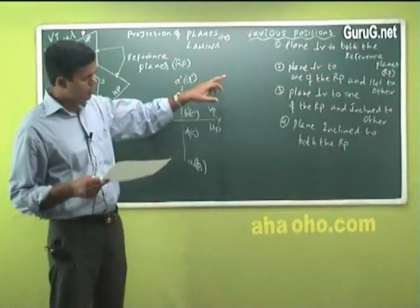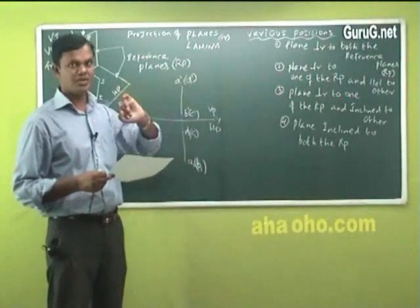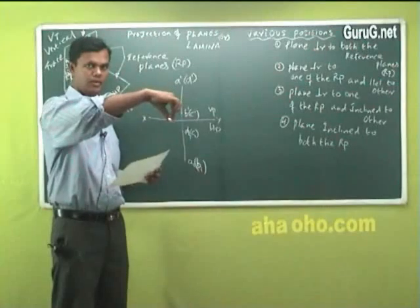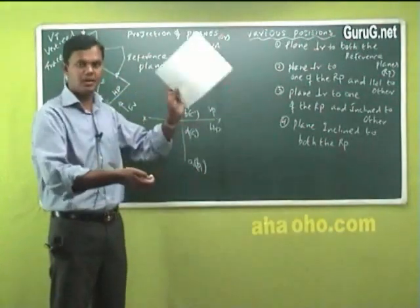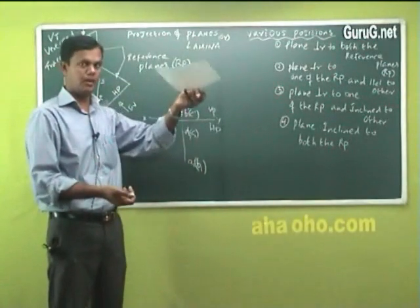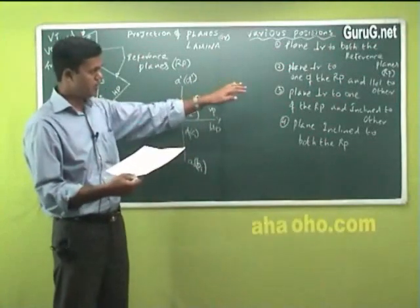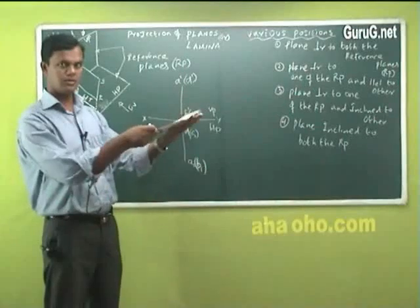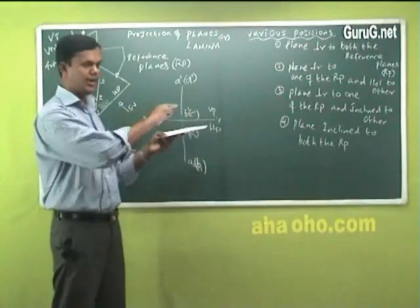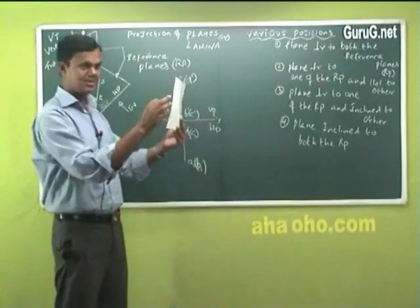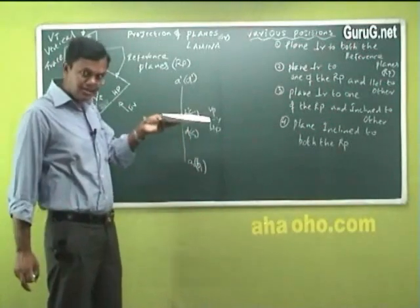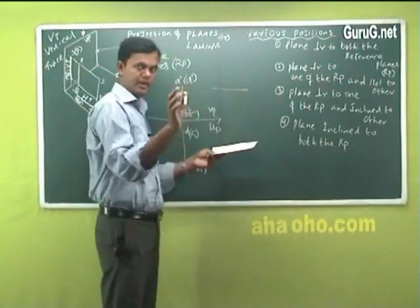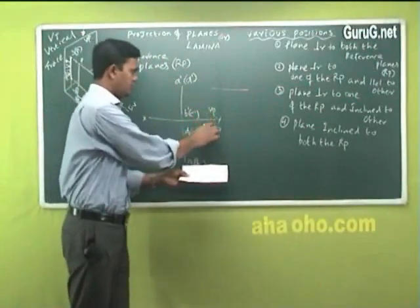Second position: plane perpendicular to one of the reference planes and parallel to the other. How would we make it? Perpendicular to VP and parallel to HP — the same fashion, you show the plane as an area without any thickness, just a paper or a plane or a lamina. In every sketch you have to indicate X, Y, VP, HP and then draw the answer.